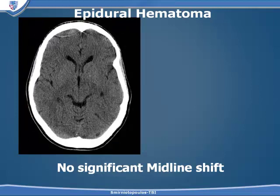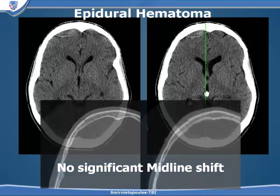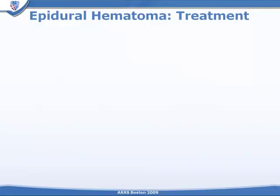Here's a patient with a subfrontal epidural hematoma. We must remember that there should be a fracture. This patient does not have displacement of the pineal gland, but using bone windowing the fracture is readily evident in the frontal bone overlying the area where we have the accumulating epidural hematoma.